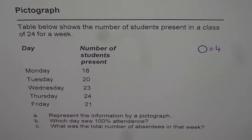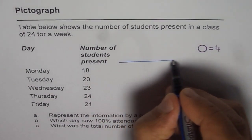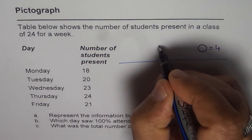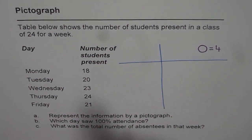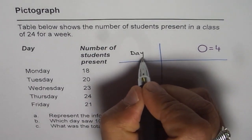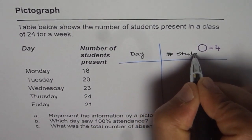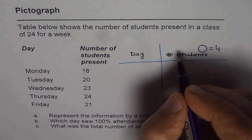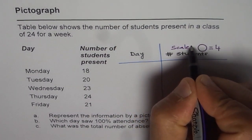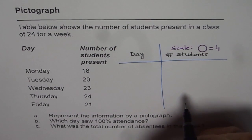So let me make a table here. So in the table what we need to fill in is days and number of students, and we have taken a scale. Let me say the scale is that circle represents 4 students. So that is the scale.